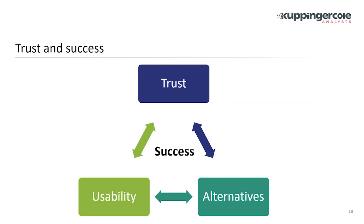Think about trust, usability, and providing alternatives for the customer. You want a long-term sustainable relationship, and that is built on trust — if the customer trusts you, they'll tell you more, do more with you, and the business will be better. Make the customer journey simple even with consent, and think about alternatives: if someone doesn't want to share data, how do you keep them as a customer, especially if that data isn't really required for your business model?